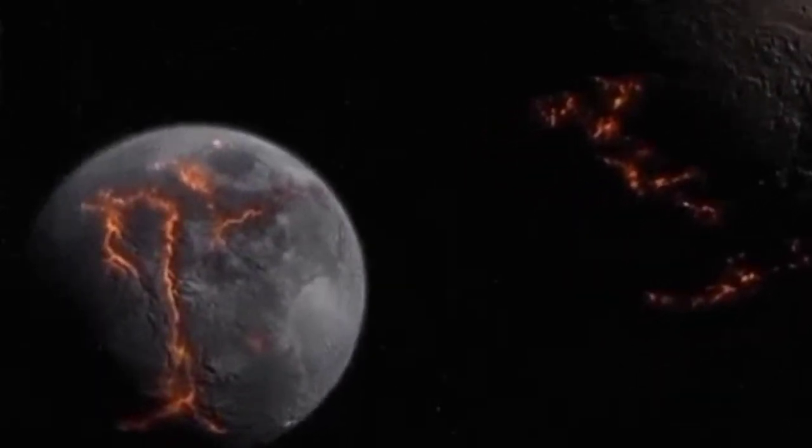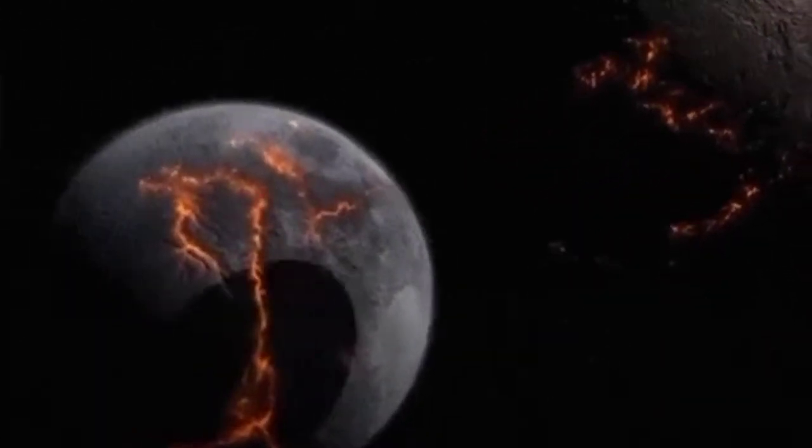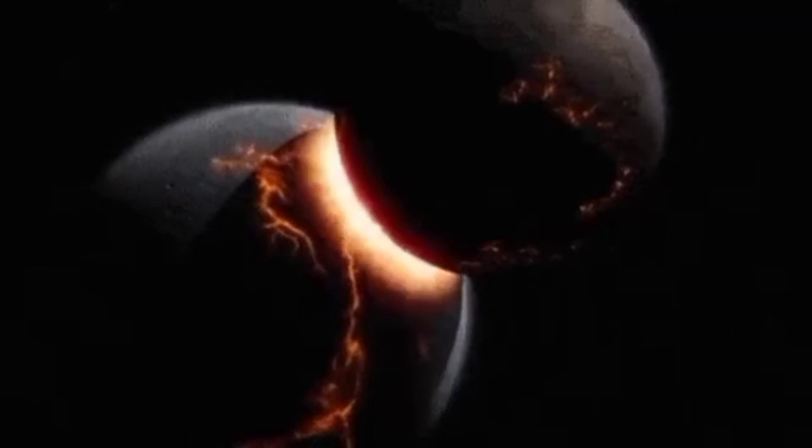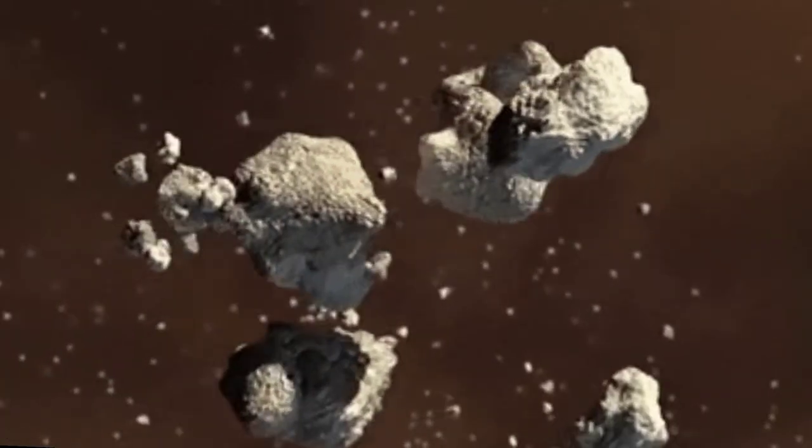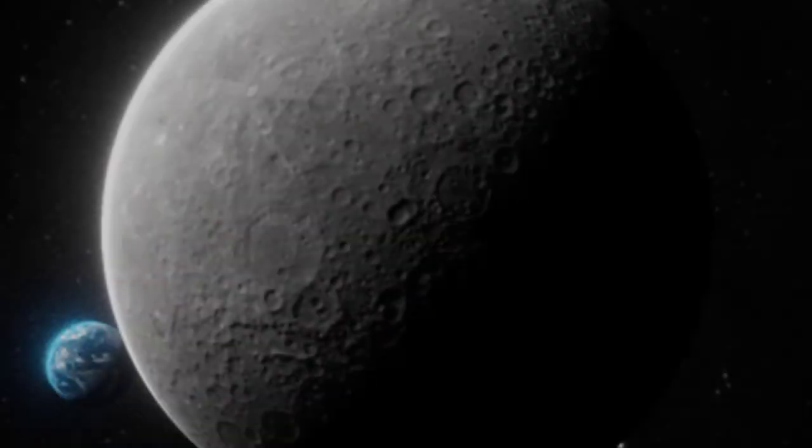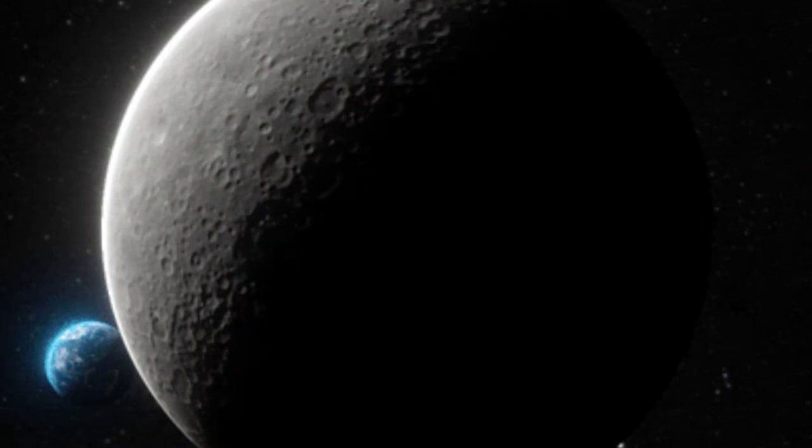Another rocky but smaller object collided with the Earth. The debris from the explosion began to orbit around the Earth. Over time, the debris collected to form bigger and bigger chunks. And finally, this led to the formation of our Moon.